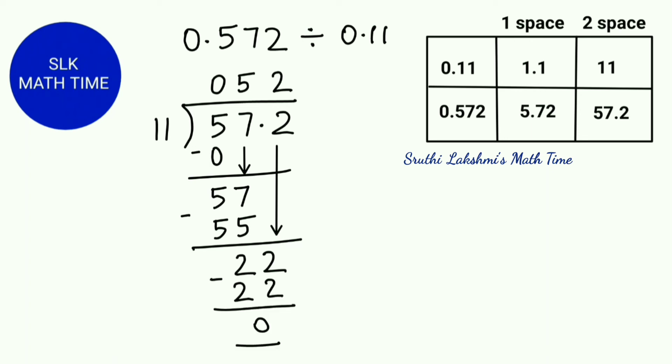There still has to be a decimal point in our answer. So we shift this decimal point straight up to the answer line, which makes our answer 5.2. So the quotient is 5.2.